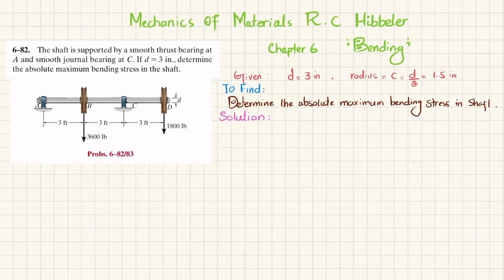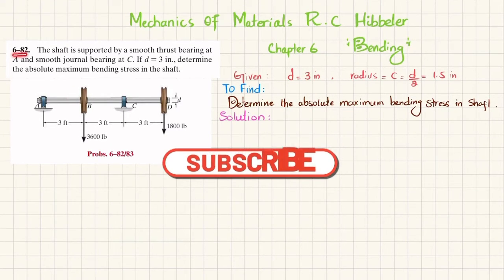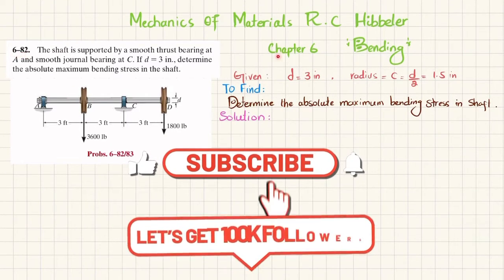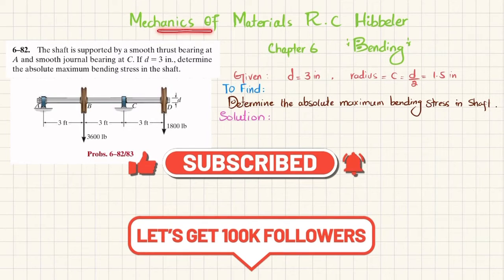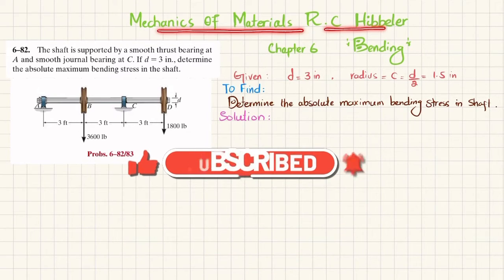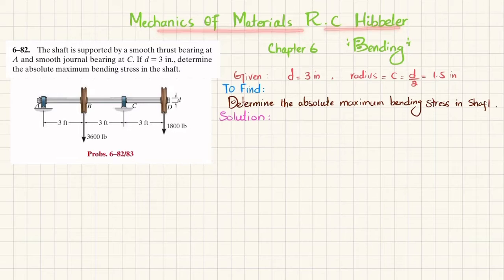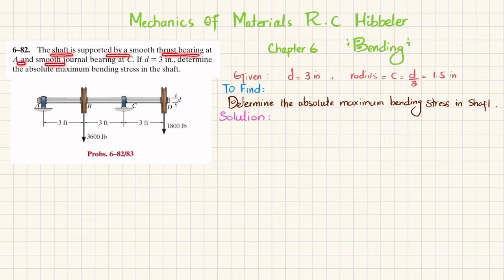Welcome back. In this video we are going to solve problem 6-82, taken from chapter 6 on bending from the book Mechanics of Materials by R.C. Hibbeler. The statement is: the shaft is supported by a smooth thrust bearing at A and a smooth journal bearing at C.